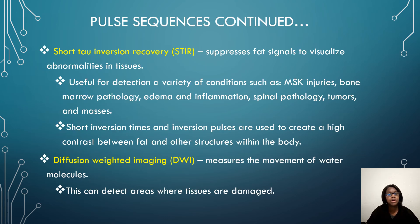Now we have your STIR, which is going to suppress fat signals to visualize abnormalities in tissues. This is very useful in different conditions like MSK injuries, bone marrow pathology, edema, inflammation, spinal pathology, and tumors or masses. It is also going to create high contrast between fat and other structures within the body.